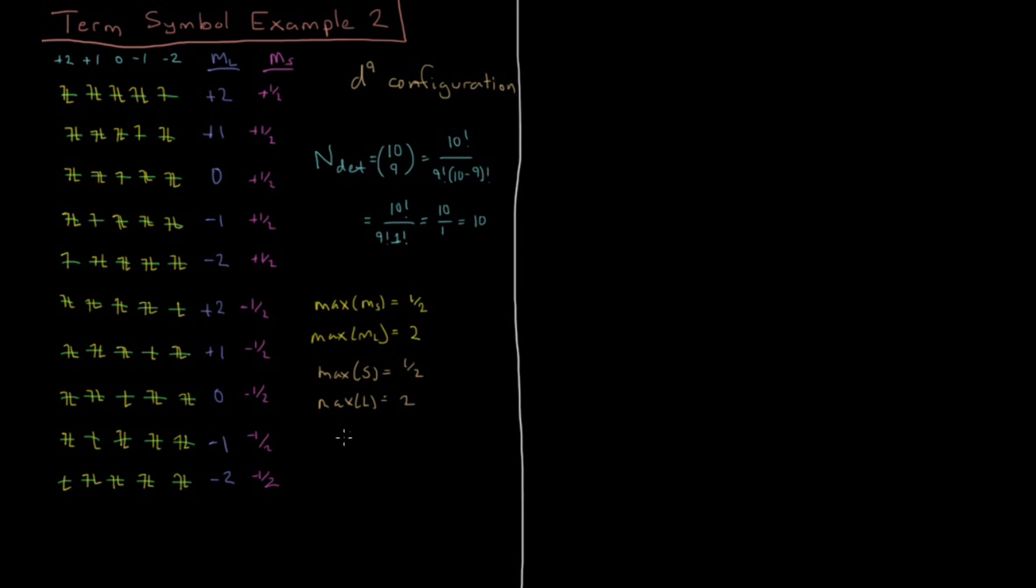Our possible values of S and L: S is a half-integer growing down from its maximum to 0. You can't subtract 1 from 1/2 and stay above 0, so S is only 1/2. For L we start at 2 and decrease to 0 by integers: we can have 2, 1, or 0, equivalently D, P, or S.